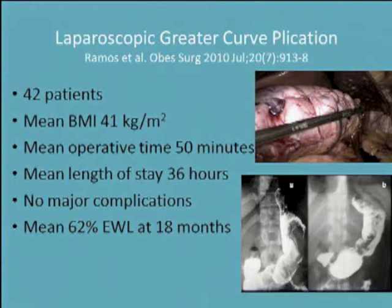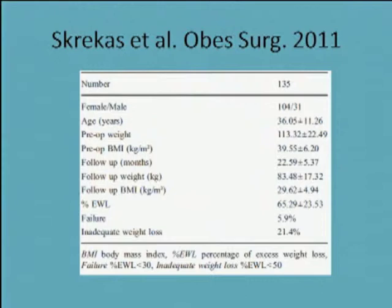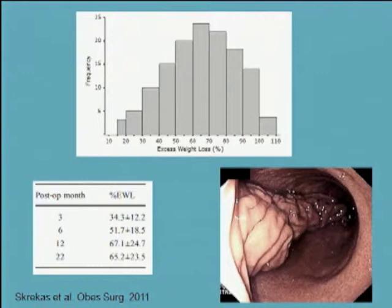A more recent study from Greece looked at two techniques, one simply capturing the mid portion of the greater curve in the plication to help prevent seromas within the fold. It was done in a short period of time with short length of stay. However, we're starting to see some incomplete or failed weight loss — about 6% had less than 30% excess weight loss and 21% had less than 50%. As with any less invasive operation, you see a wider distribution of outcomes the longer you follow patients. That fold may be intact endoscopically, but there's still substantial gastric volume remaining, and as the stomach becomes compliant again, some patients start regaining weight.